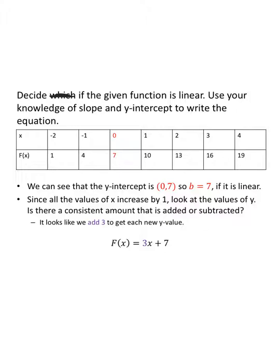Decide if the given function is linear. Use your knowledge of slope and y-intercept to write the equation. Notice the x values are increasing by one each time. An x value of zero gives a y value of seven, so the point (0, 7) is on the graph, and if this function is linear, I can see my b value is seven.